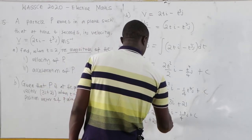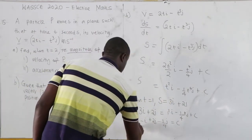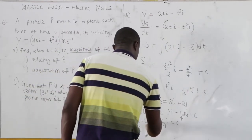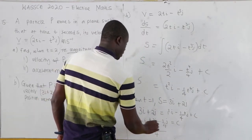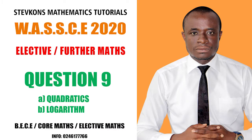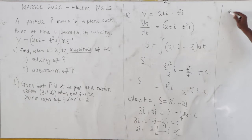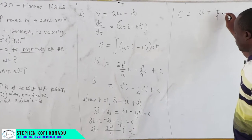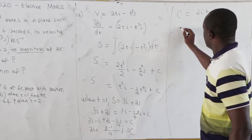Taking the LCM as 4: C equals 2i plus (8 plus 1)/4 j, so the constant of integration is 2i plus 7/4 j.